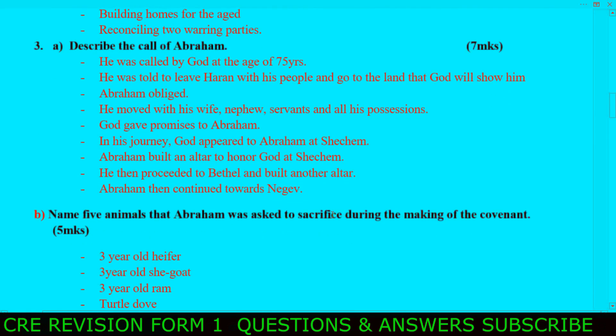God gave promises to Abraham. In his journey, God appeared to Abraham at Shechem, and Abraham built an altar to honor God at Shechem. He then proceeded to Bethel and built another altar. Abraham then continued on his journey.